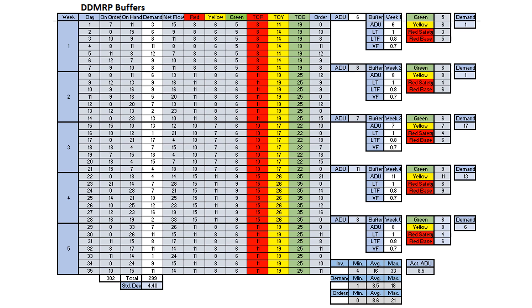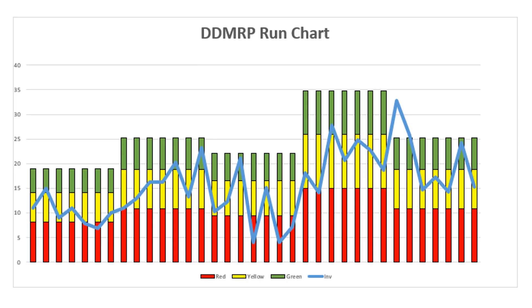Here we can see the results for the 35 days using the dynamically adjusted DDMRP buffers. We did not run out of stock on any day and provided 100% customer service. This diagram shows the weekly calculated ADU dynamically adjusted buffers and the inventory on-hand balance. We did penetrate the red zone on 5 occasions, which is to be expected, but the buffer always had availability of stock and provided 100% customer service.